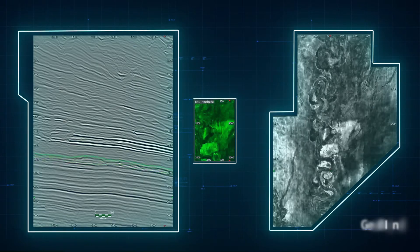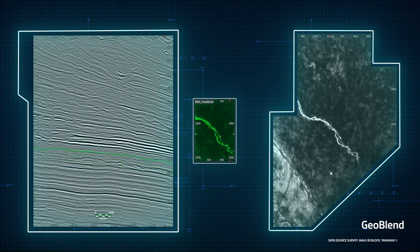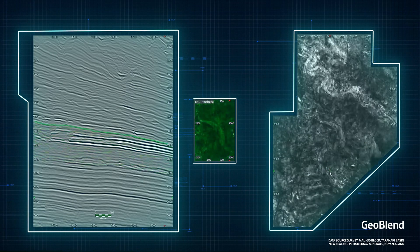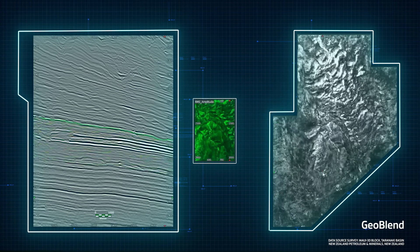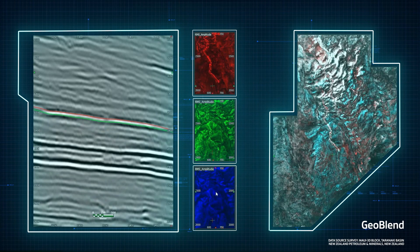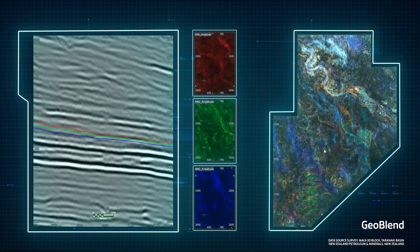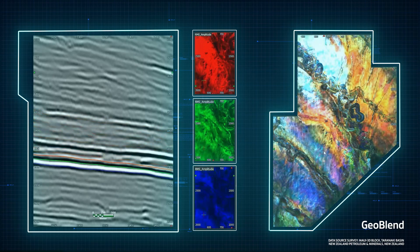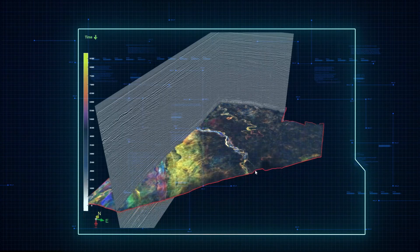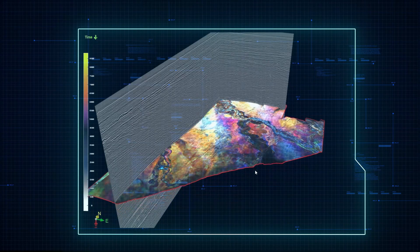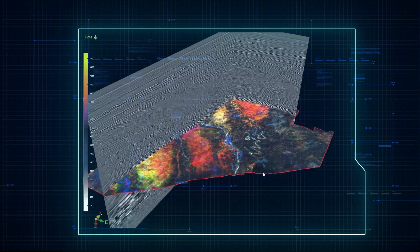Rapidly screen geological connectivity with GeoBlend, a tool for blending geological intervals to better understand the juxtaposition and connectivity of geological features, such as splays, channels, and lobes, illuminating thick stratigraphic packages using seismic and attributes as input.